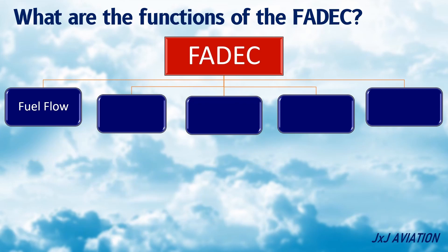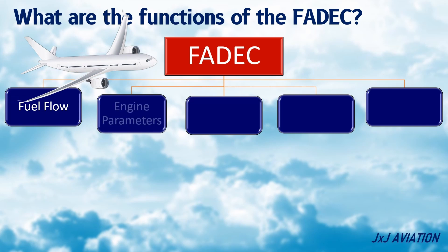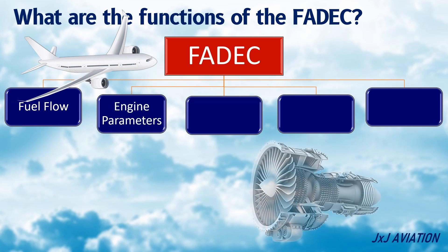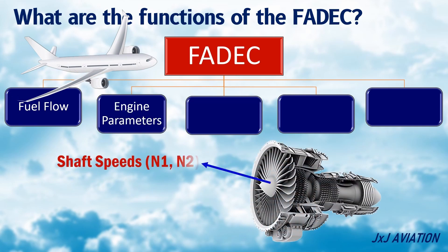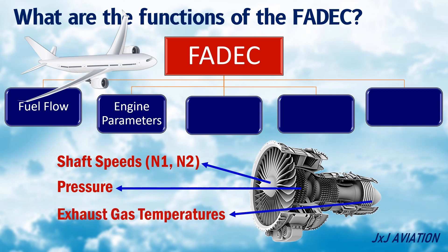The FADEC monitors different engine parameters such as the shaft speeds N1 and N2, pressure in different sections, and exhaust gas temperatures. In case these parameters exceed certain limits, alerts are triggered in the cockpit.